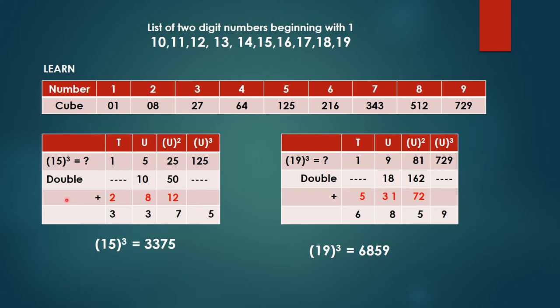Then next step is ignore the first and the last number, the middle two numbers, that is your number in the units place and its square. We need to double that number, means multiplied by 2. So 5 times 2 is 10, 25 times 2 is 50. That's it.